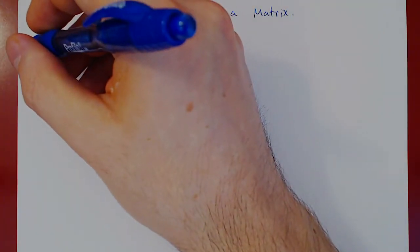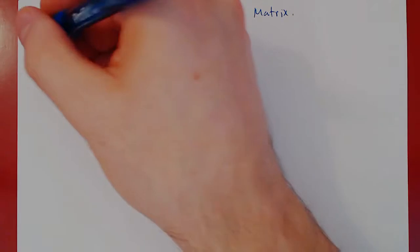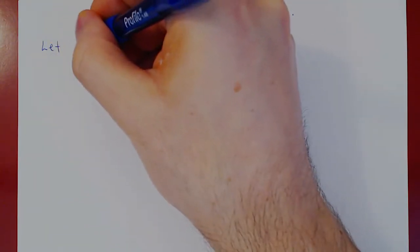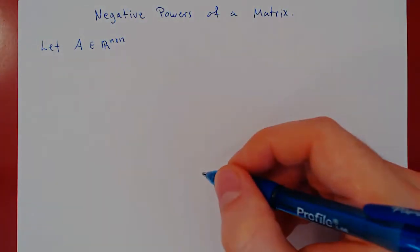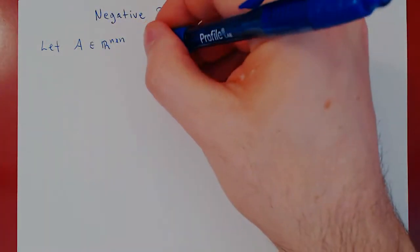So, our assumption is we take an invertible square matrix. So, let A be an arbitrary n by n matrix. So, let this matrix A be invertible.